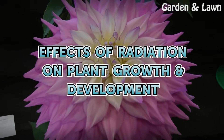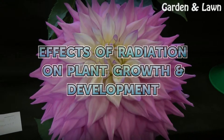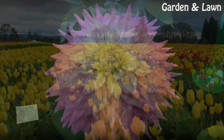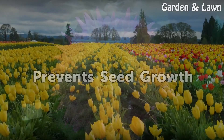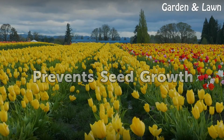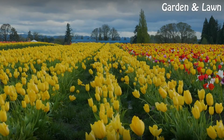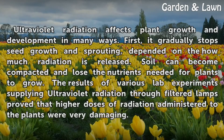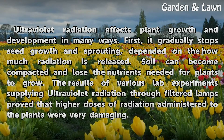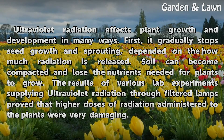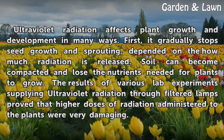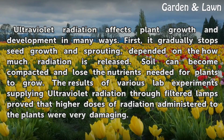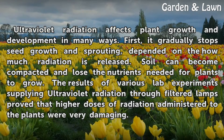Effects of Radiation on Plant Growth Development. Ultraviolet radiation affects plant growth and development in many ways. First, it gradually stops seed growth and sprouting, dependent on how much radiation is released.